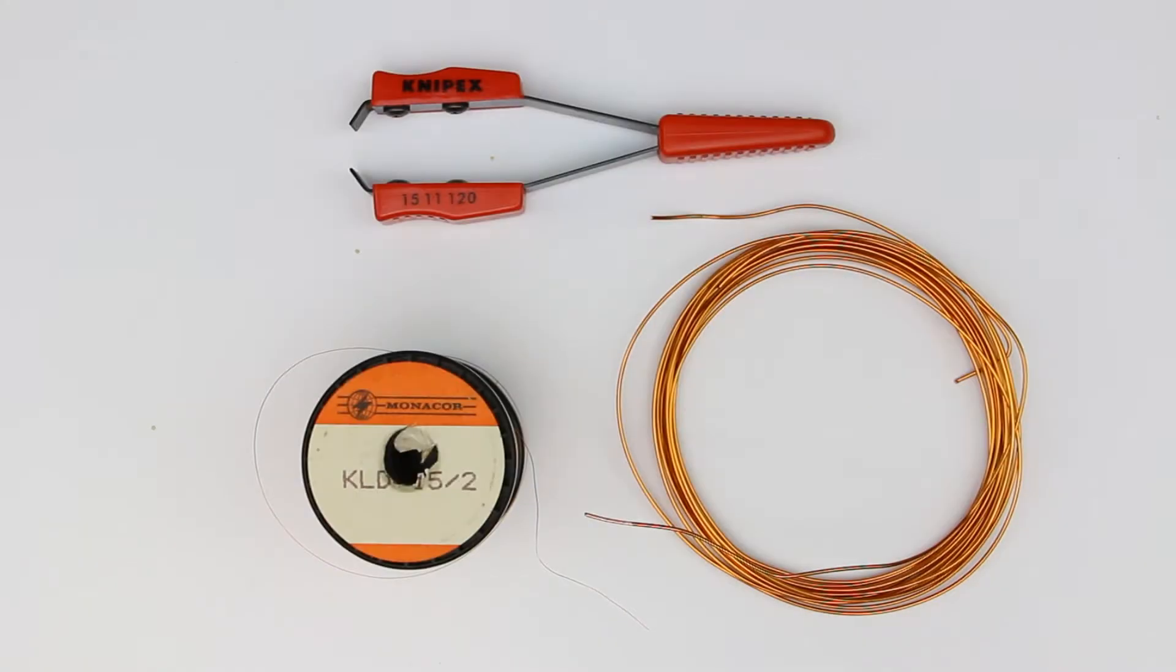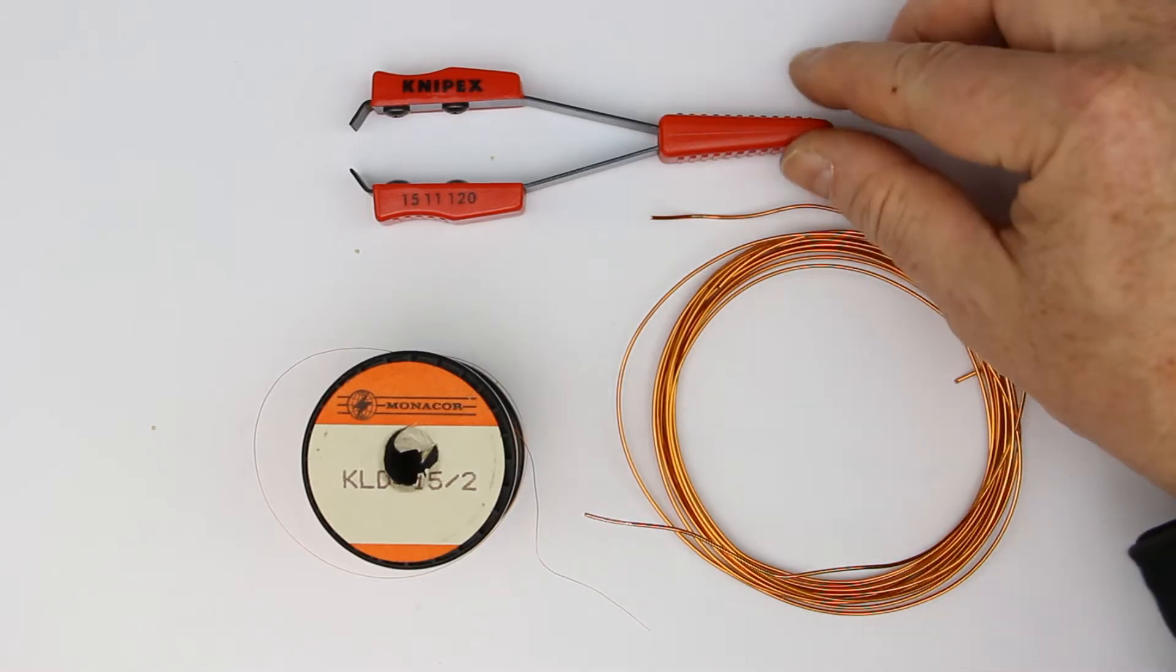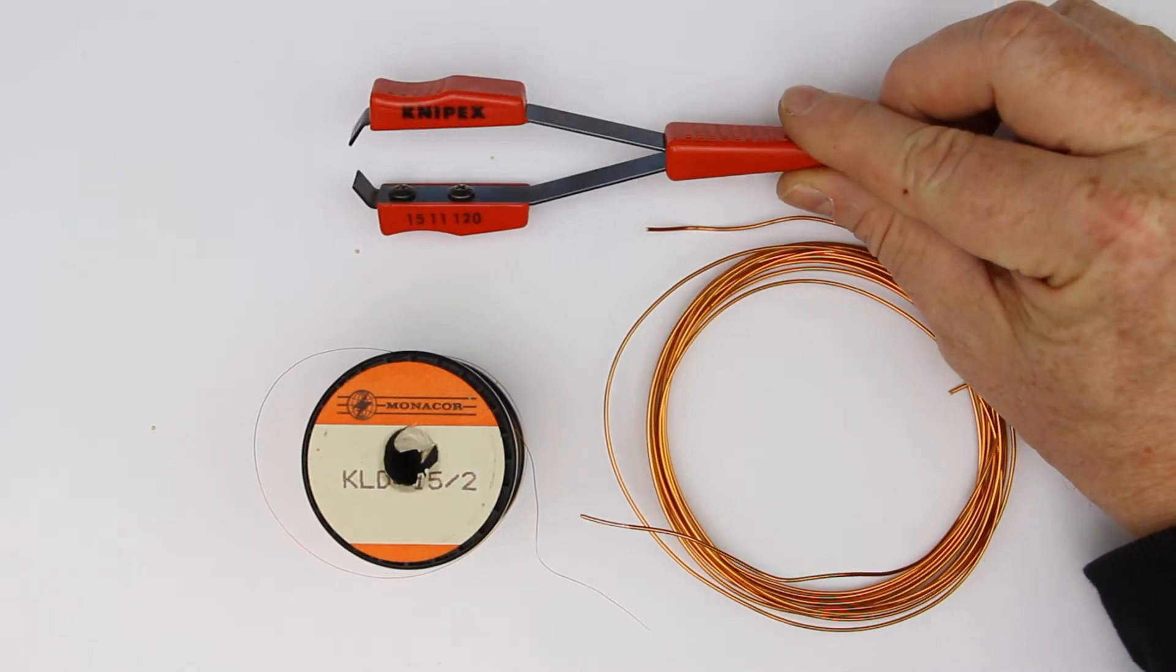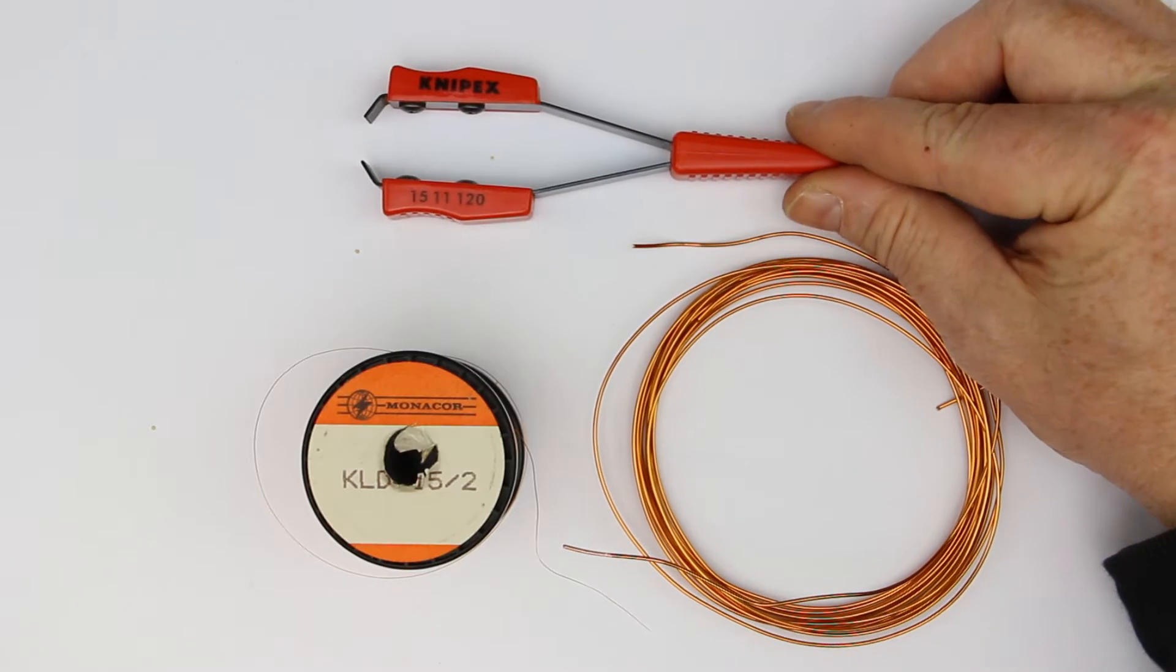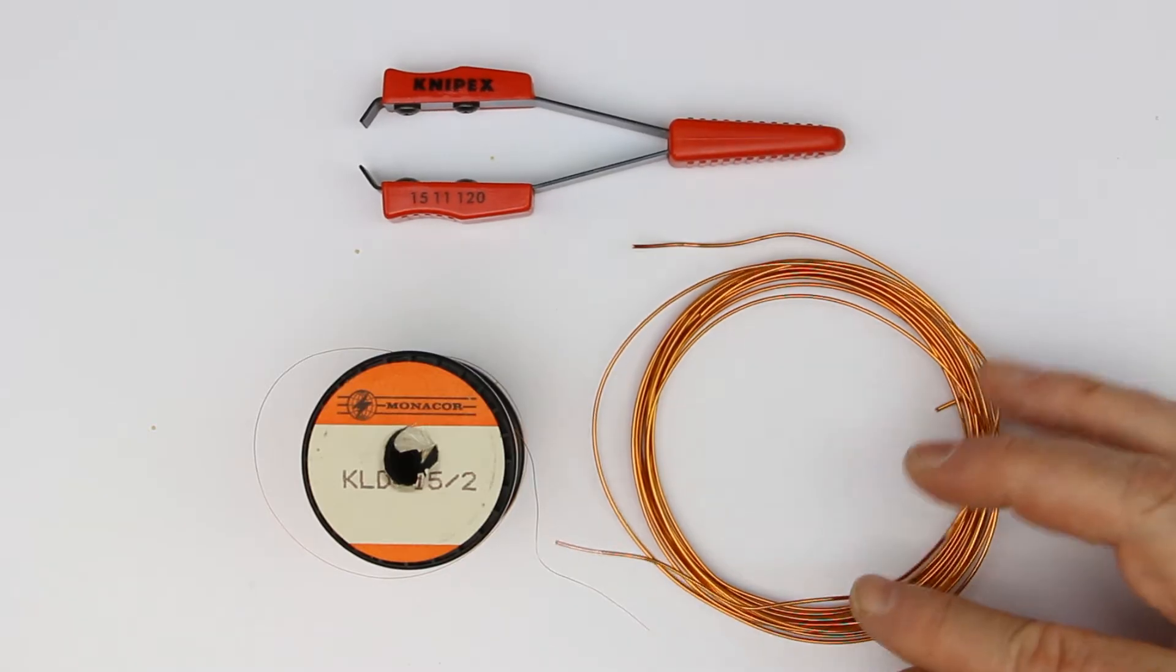Hi, this is Roger from Kanka Labs and in our today's M-Show, which stands for what every maker should have one, it's about getting the enamel off from enamel copper wire or magnet wire. There are basically two methods: you can use your soldering iron or you can use this neat little stripping tool from KNIPEX, however you want to call them.